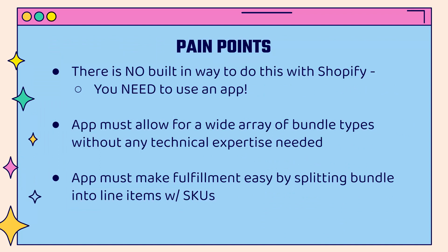Number one: there's no built-in way to do this with Shopify — you're going to need to use an app. The app must allow for a wide array of bundle types. We don't need to make this technical or have any code. We want to be able to very easily set up different bundle types, whether it's individual customizable products, preset bundles, or customizable bundles — all these different options for your customer. The idea is we're using bundles to give the customer exactly what they want, and we want to be as flexible as possible.